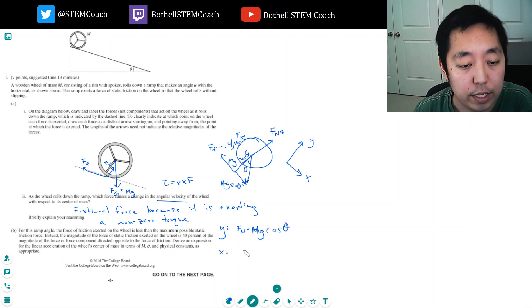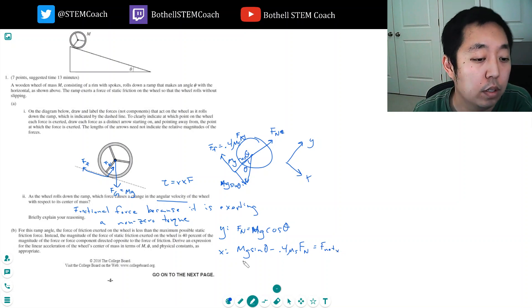The x direction, my net force is mg sine theta minus force of friction, which is 0.4 static friction, normal force, right? Because the static friction times Fn would be the frictional force at 100%, but it's only 40%. And that equals Fnet in the x direction, which is equal to M times A.